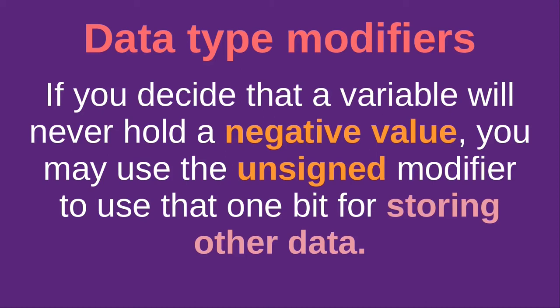So if you decide that a variable will never hold a negative value, you may use the unsigned modifier to use that one bit for storing other data.